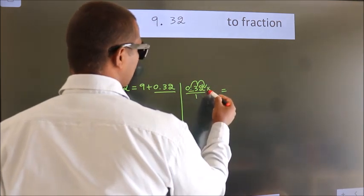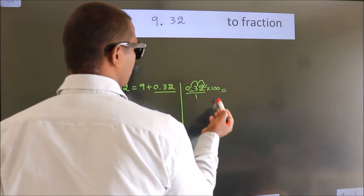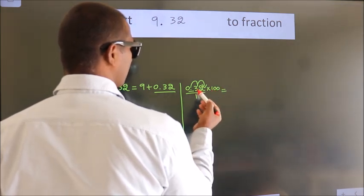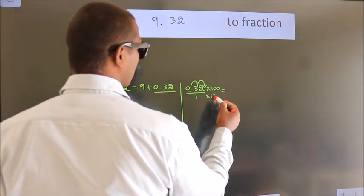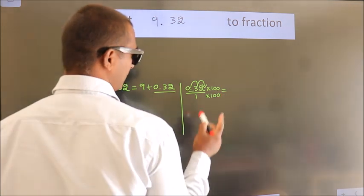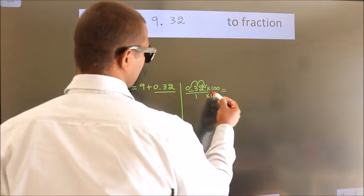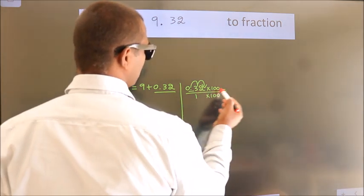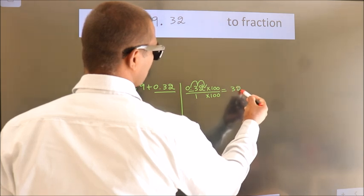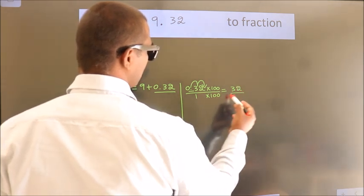for that multiply it with 100. Whatever you are multiplying in the numerator, in the denominator also do the same. Next, 0.32 into 100 is 32. 1 into 100 is 100.